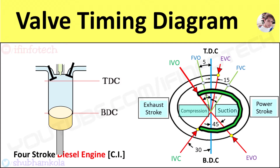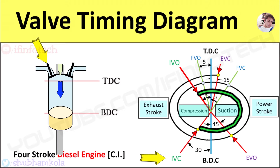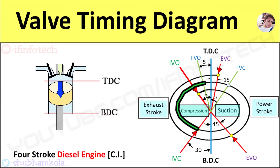During the suction stroke, pressure inside the cylinder is atmospheric. When the piston moves from TDC to BDC, volume increases and this creates a pressure difference inside the engine cylinder. Due to this pressure difference, fresh air enters the engine cylinder and fills it completely. The inlet valve closes at 30 degrees after BDC. Compression stroke then starts; fresh air is compressed, so pressure and temperature increase. Fuel is spread by the fuel injector over the fresh air at 5 degrees before TDC, and fuel injection closes at 25 degrees after TDC.